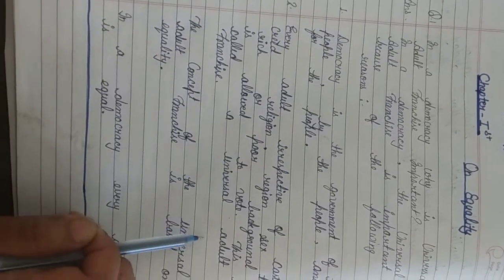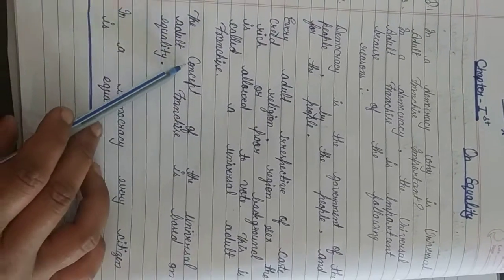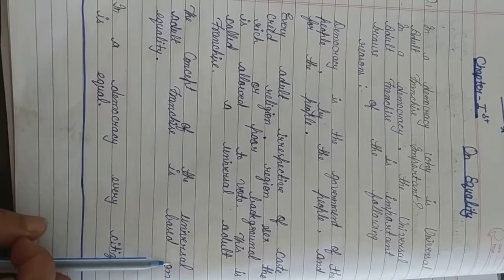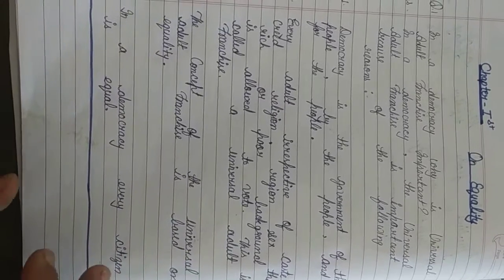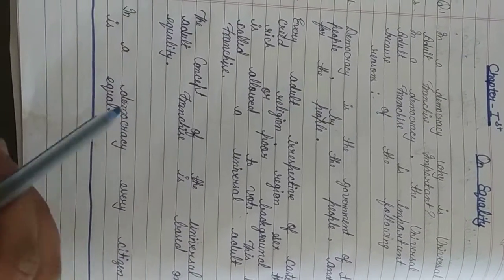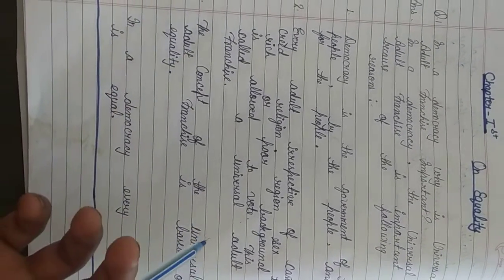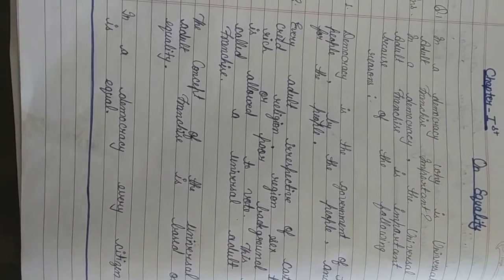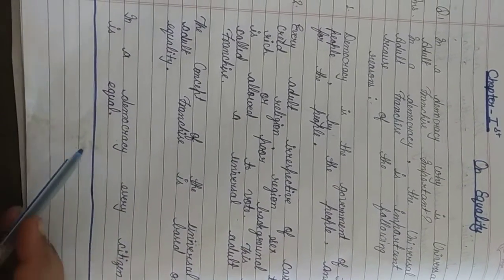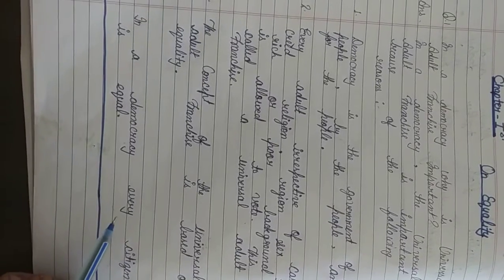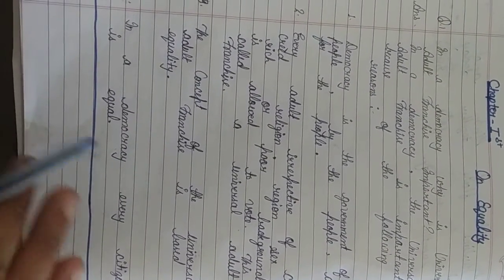Next, the concept of universal adult franchise is based on equality. All adults are not discriminated on the basis of caste or religion, so everyone is equal according to this. And in a democracy every citizen is equal, and democratic government treats everyone equally without discrimination on any basis.